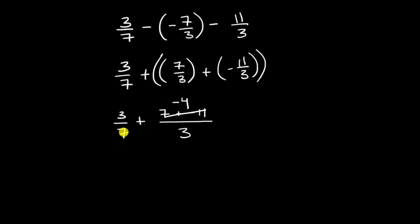And so now we have 3/7 plus negative 4 over 3. And so now we definitely need to find a common denominator. This is equal to 3/7 plus negative 4/3, or I could write this as negative 4 thirds either way. But if we want to have a common denominator, it looks like 21 is going to be the least common multiple of 7 and 3. So let's rewrite each of these as something over 21.